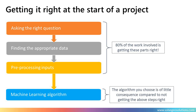Machine learning won't ask the question for you. In exploration right now, if you don't have a good question then you're not doing science. You need to ask a good question, find the appropriate data to answer that question, and pre-process that data to make sure it's relevant — and that is most of the work in any job. The actual machine learning part is only a little bit at the end. You still have to do science the way you've always done science. The algorithm you choose is potentially not that consequential either — you may get a few percent difference in accuracy, but if you don't get those top three things right, you're going to get a poor result.